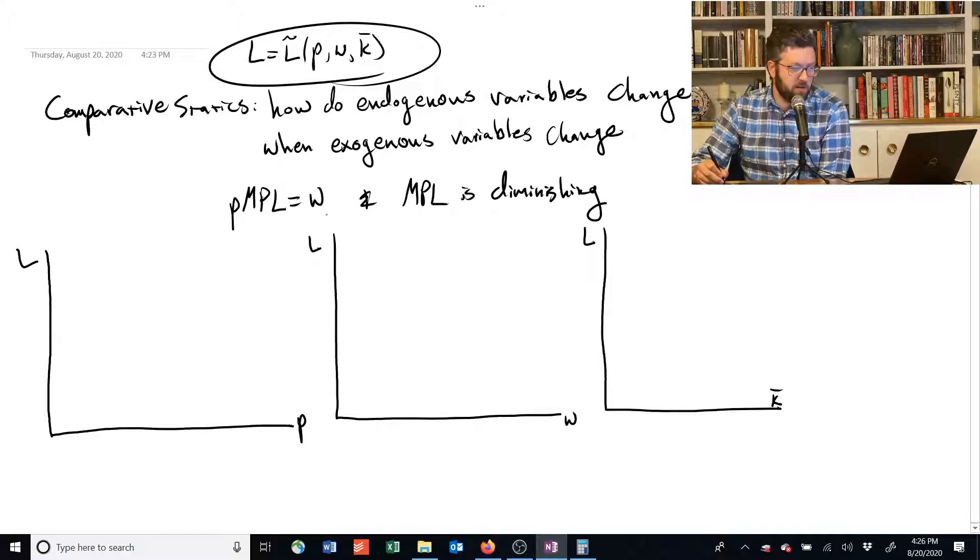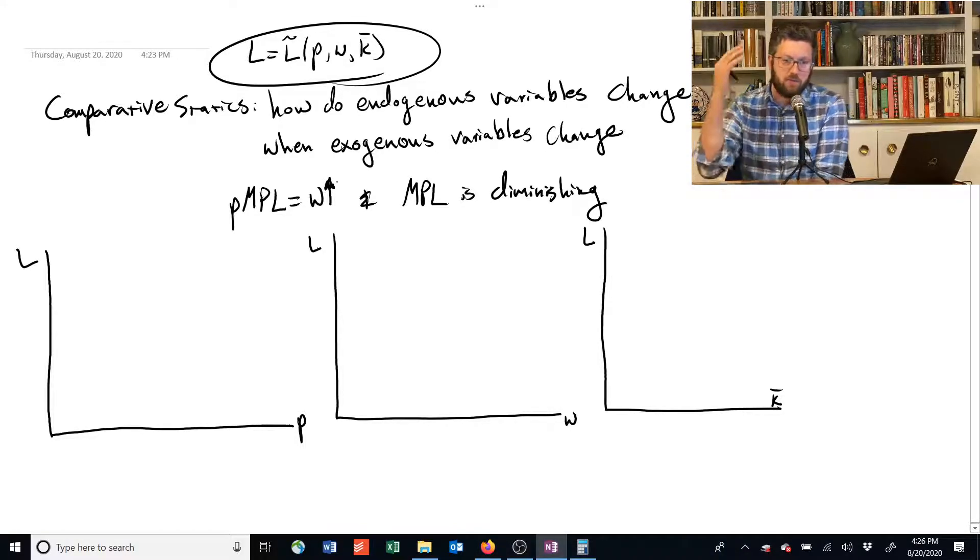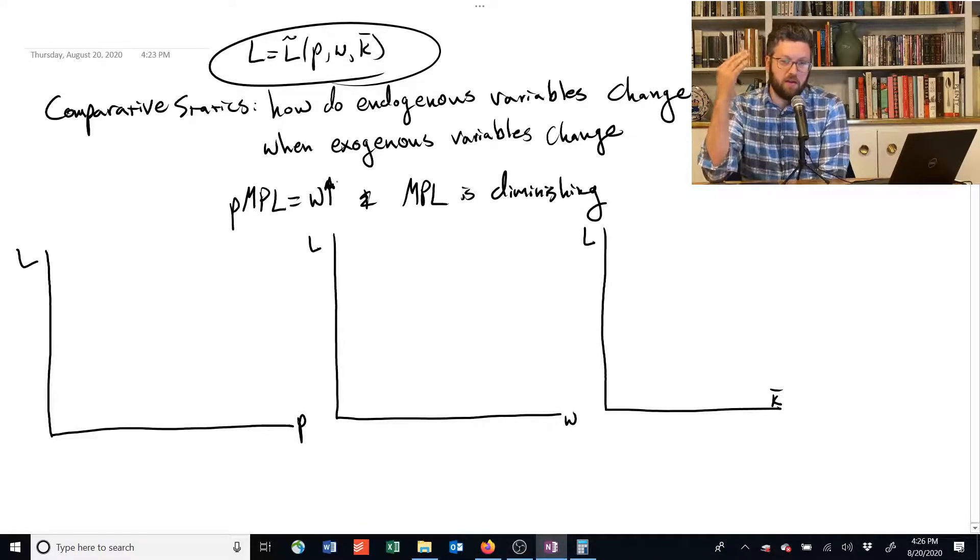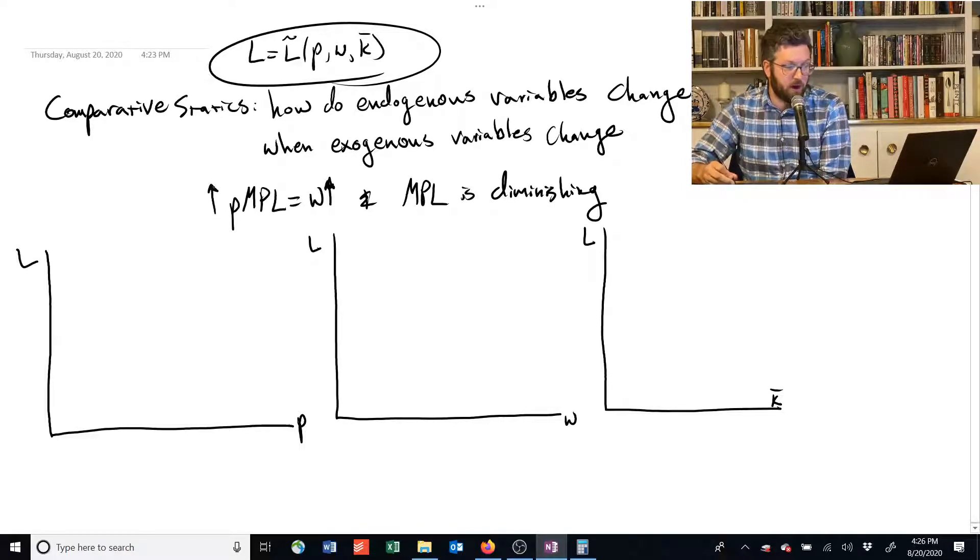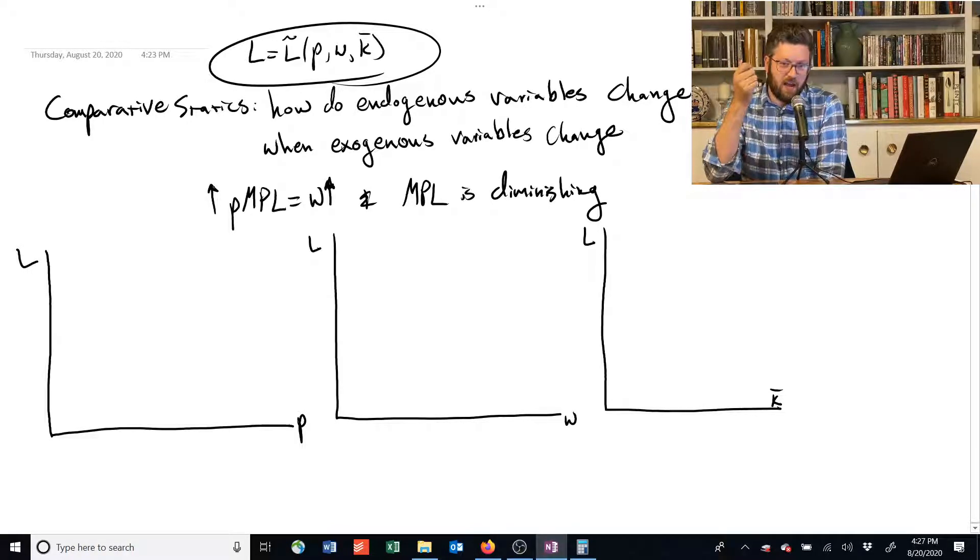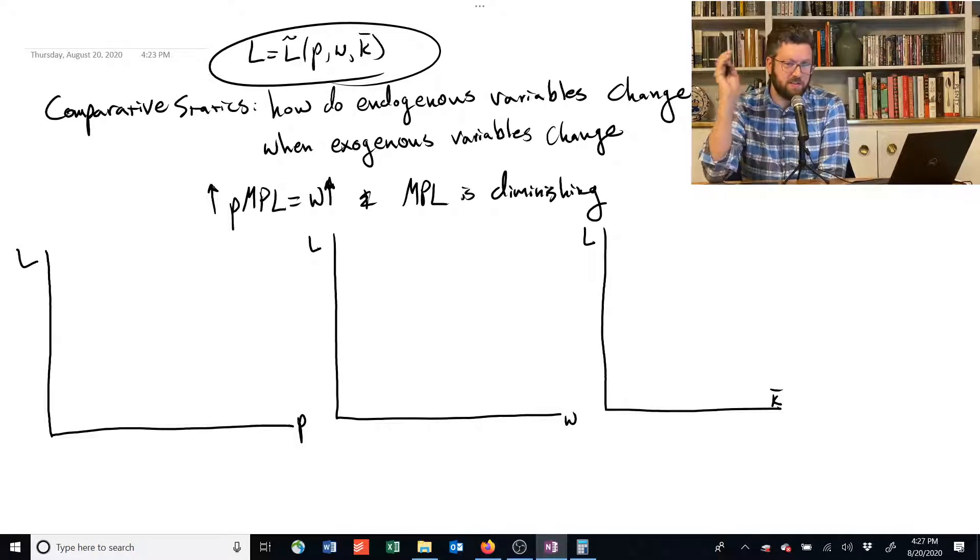Let's start with the middle here. This is kind of the most easy to imagine. What happens if the wage rate goes up? If the wage rate goes up, then we need the left-hand side of this to also go up. How do we increase the left-hand side? Well, remember, the price is given to us. We're not going to change that.